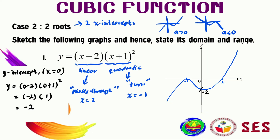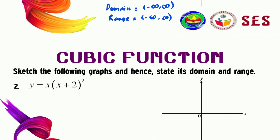The domain for this function is negative infinity to positive infinity, and the range is also negative infinity to positive infinity. Please check your graph and make sure it only passes through two points on the x-axis. Let us now proceed to question number two.